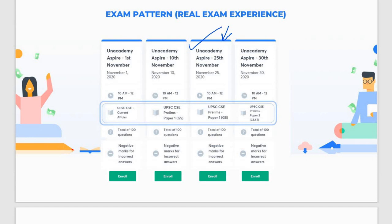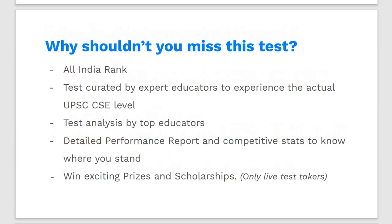The link is given below in the description box. Once you click on it, you will be redirected to the quiz — click Enroll and you can give the test. Download the Unacademy Learning App and register yourself on the app. You will receive your All India rank, solutions, and a detailed performance report. The test is curated by expert educators who have experience in the actual UPSC CSE exam.